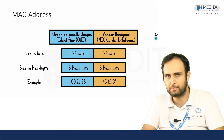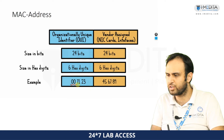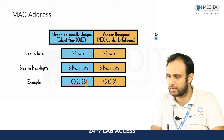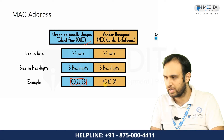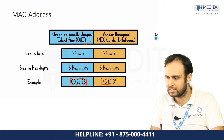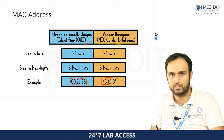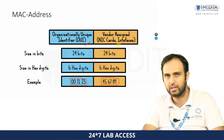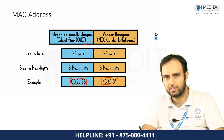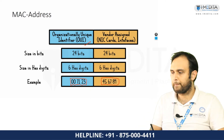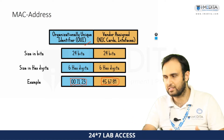Here's a sample MAC address. If you look at it, the part 007123 is basically the OUI. And 456789 is the vendor-assigned part of this MAC address. These addresses are used by Ethernet and Wi-Fi. That's pretty much it about MAC address.